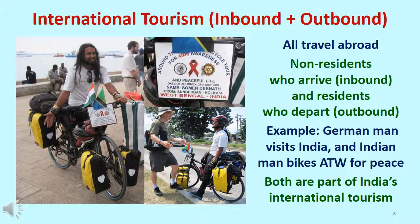International tourism is the total of all travel abroad. So a country counts non-resident travelers who arrive, which is inbound tourism, and residents who depart, which is outbound tourism. For example, the country is India. A German man visits various temples and tiger preserves in India, and an Indian man bicycles around the world for peace. Both count as part of India's international tourism total.